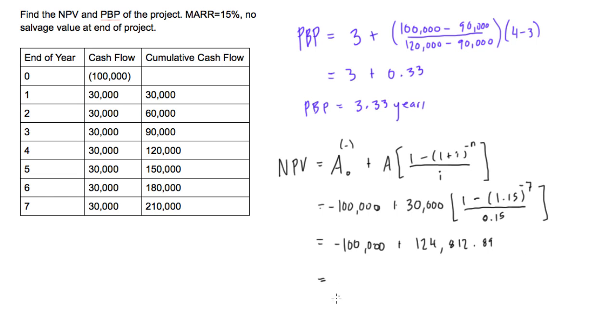So if we add these two together, we're going to get a positive value. This is just going to be $24,812.89. This is our net present value. So this is good.